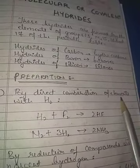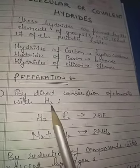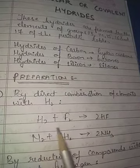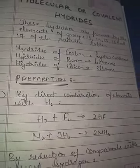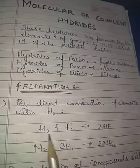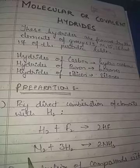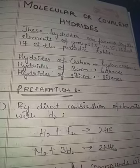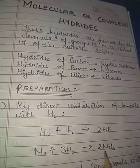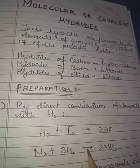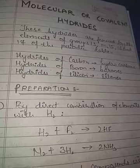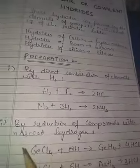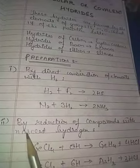The first preparation method is by direct combination of elements with hydrogen. For example, hydrogen combines with fluorine to form HF, and nitrogen combines with hydrogen to form ammonia — certain conditions are required for these reactions.